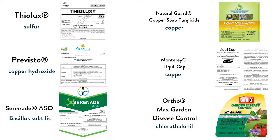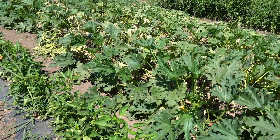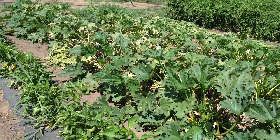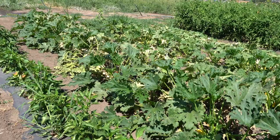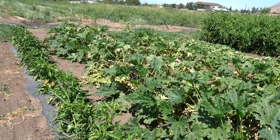Once leaves are covered with powdery mildew, chemical control will no longer be effective. Remember, sulfur products cannot be applied above 90 degrees Fahrenheit as this will cause foliar injury.